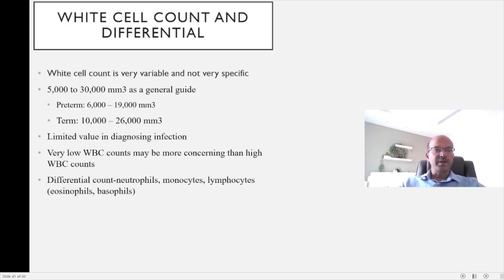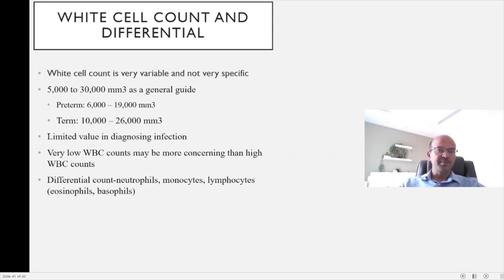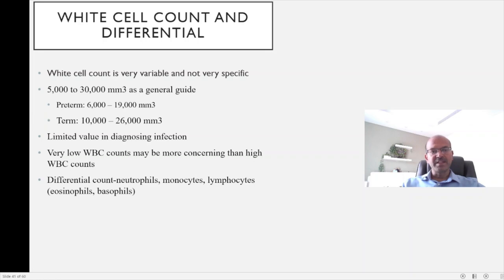The white cell count is quite variable and not a very specific test — the range is from 5,000 to 30,000. The normal labor process itself may cause the count to go up, and the impact of nucleated RBCs on the count should also be noted, so always wait for the manual count to confirm. In premature babies the count is slightly lower compared to term babies, where it can go up to 26,000 to 30,000. It has limited value in diagnosing infection because of its non-specific nature — any stress can cause a white cell response.